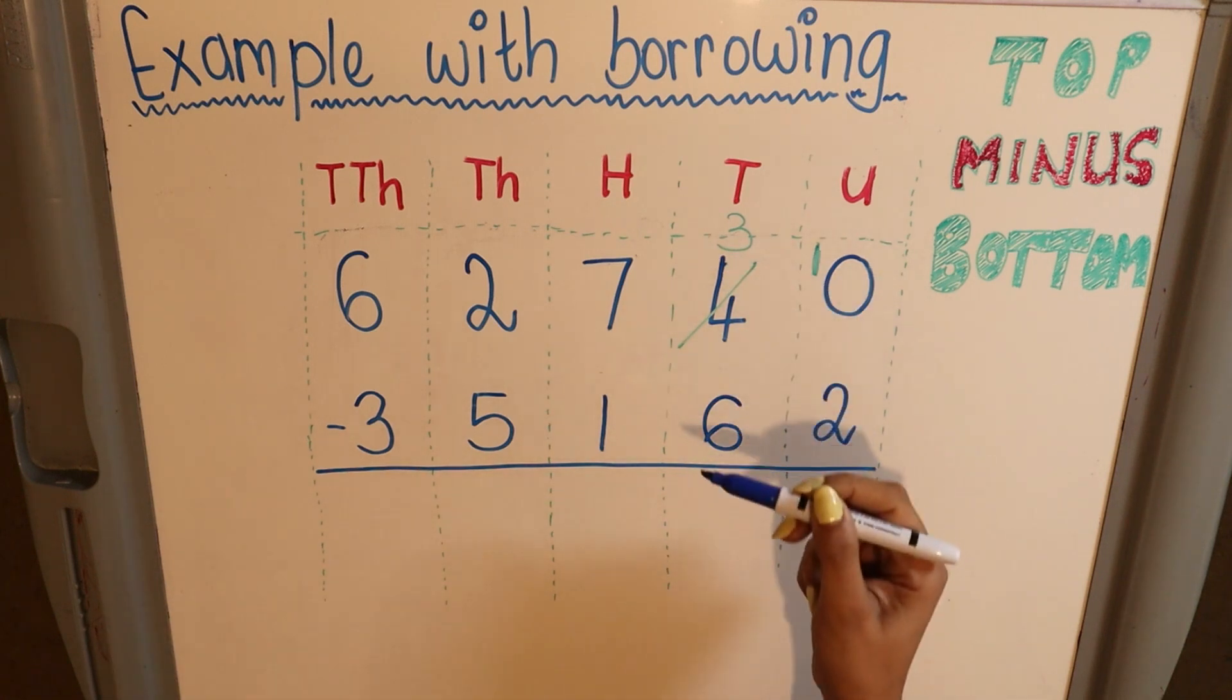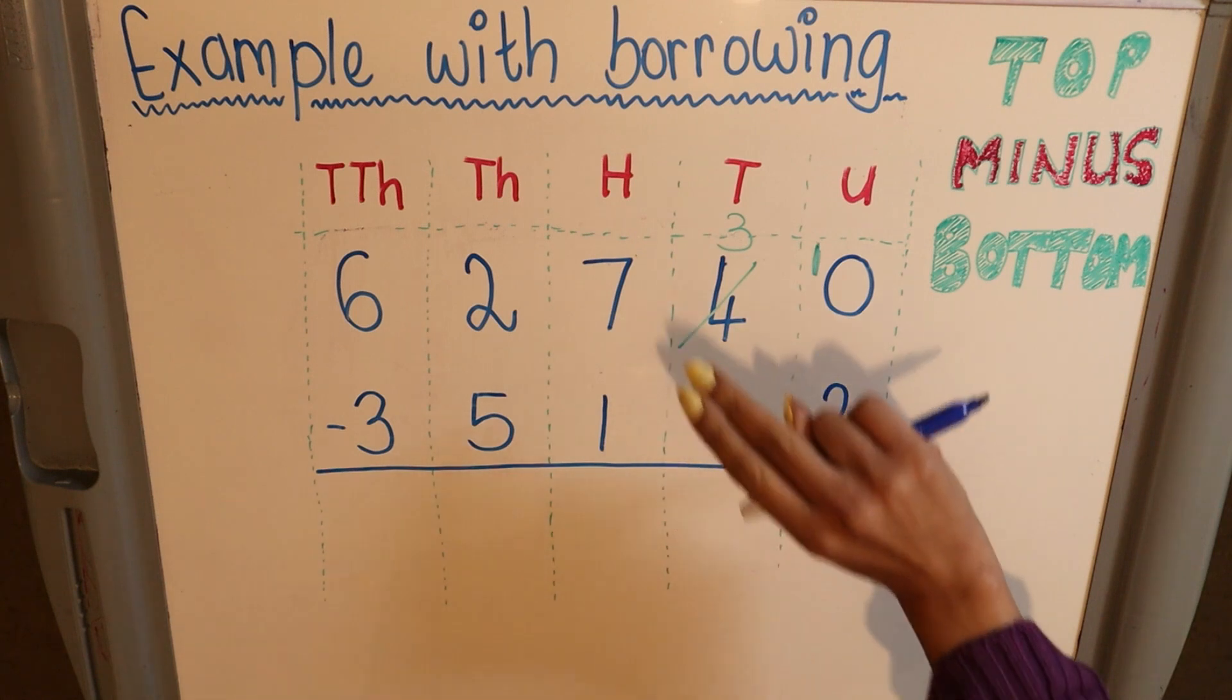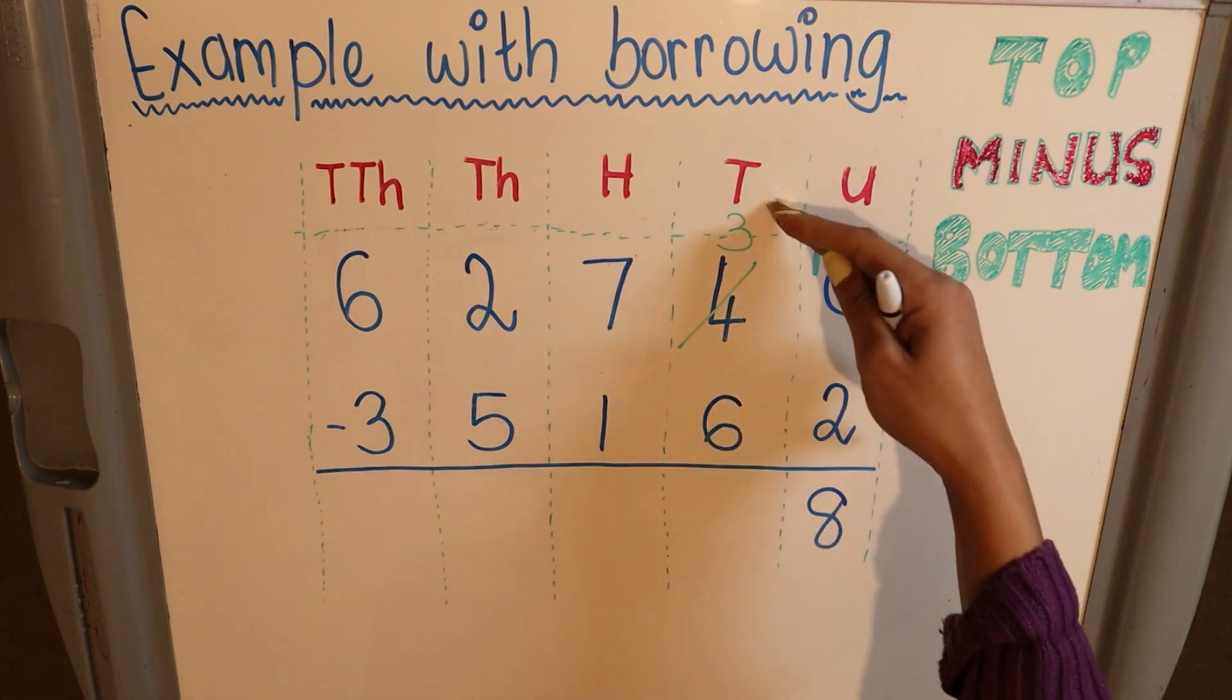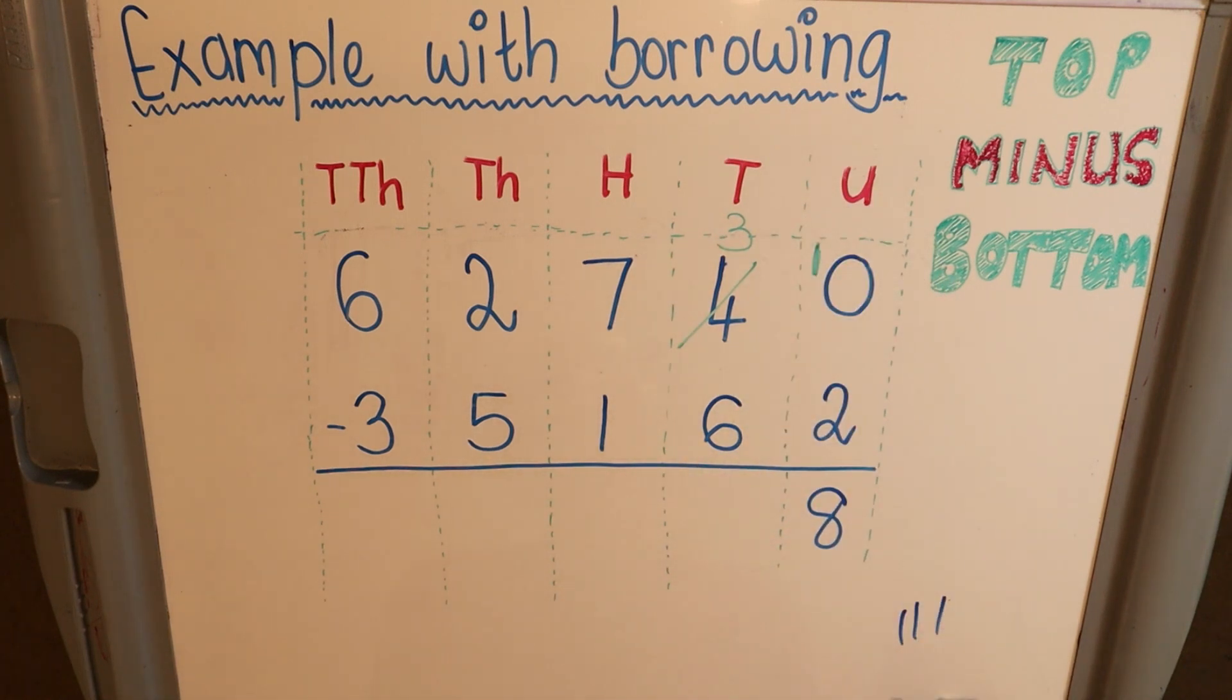Again, the second one: top minus bottom. Remember you have 3 here. You can't turn it around. You can't say 6 minus 3. So I'm going to say top minus bottom. So 3 minus 6—can I do that? If I have 3, can I take away 6? I can only take away 1, 2, 3, right?